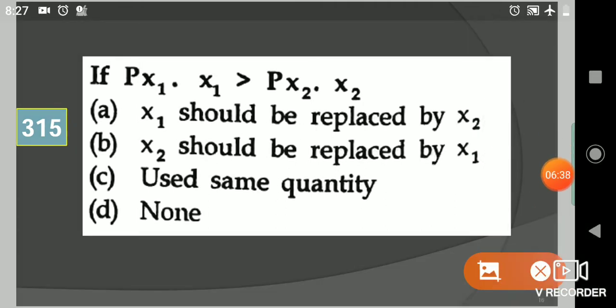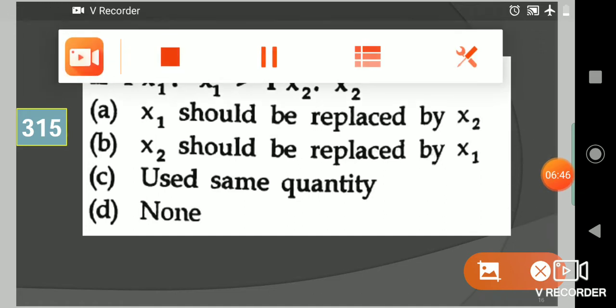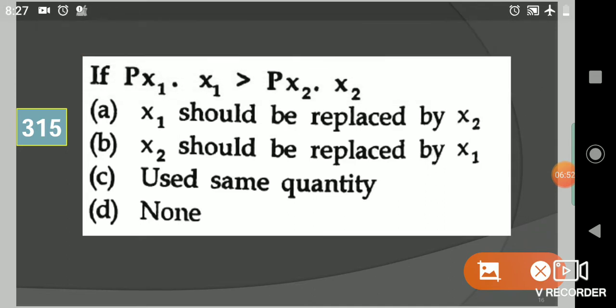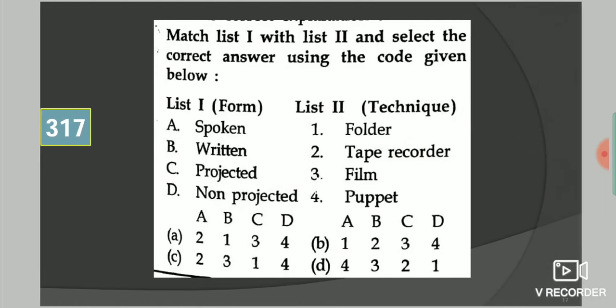Next question: If Px1 × x1 is greater than Px2 × x2, then what is correct? Your options are x1 should be replaced by x2, x2 should be replaced by x1, use same quantity, or none. Your answer is x1 should be replaced by x2.